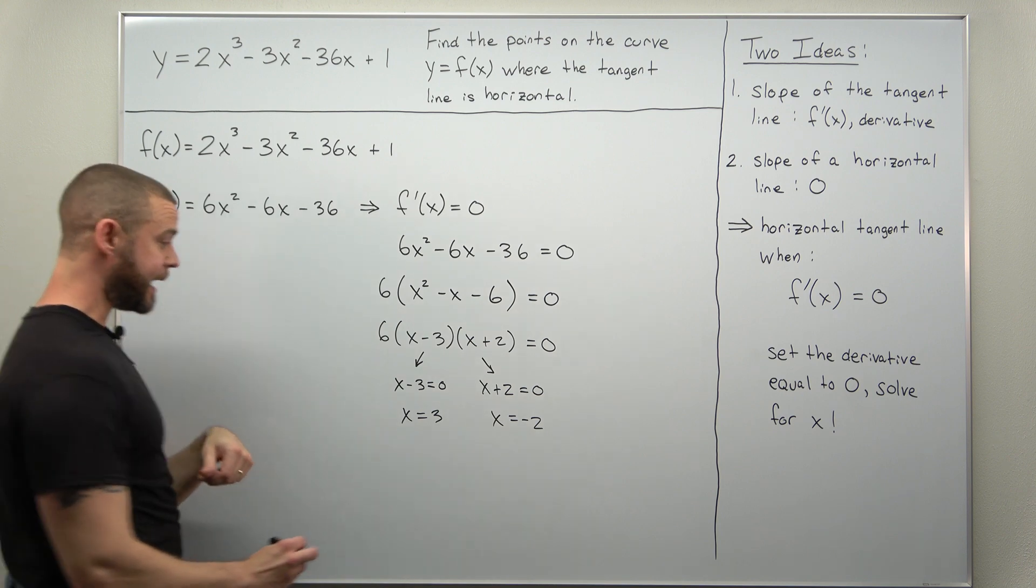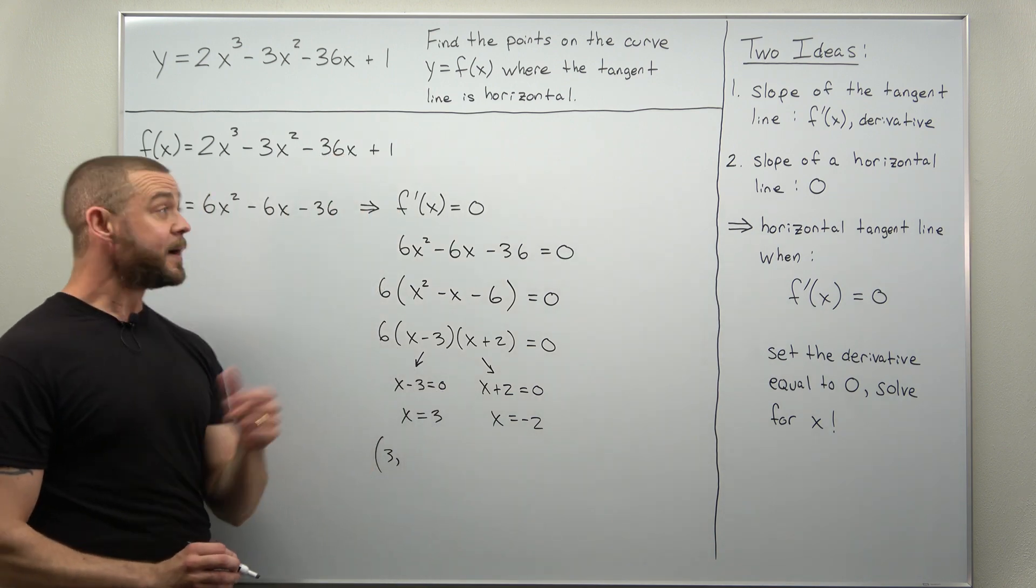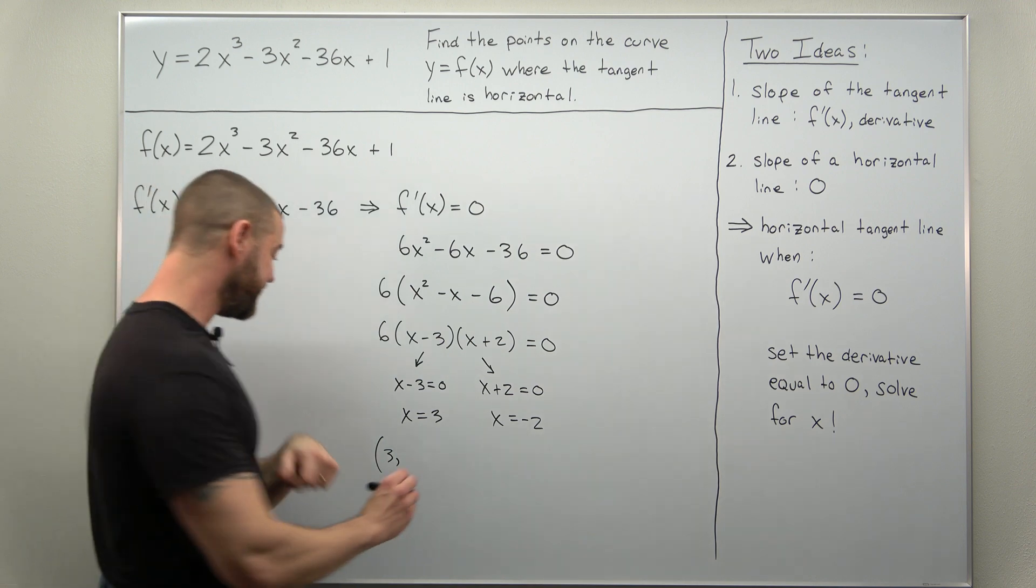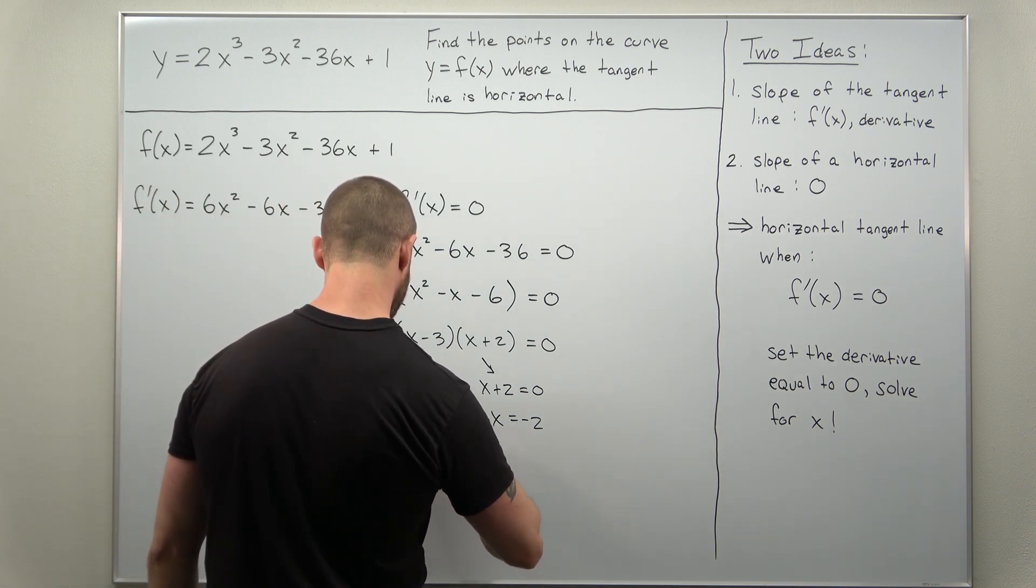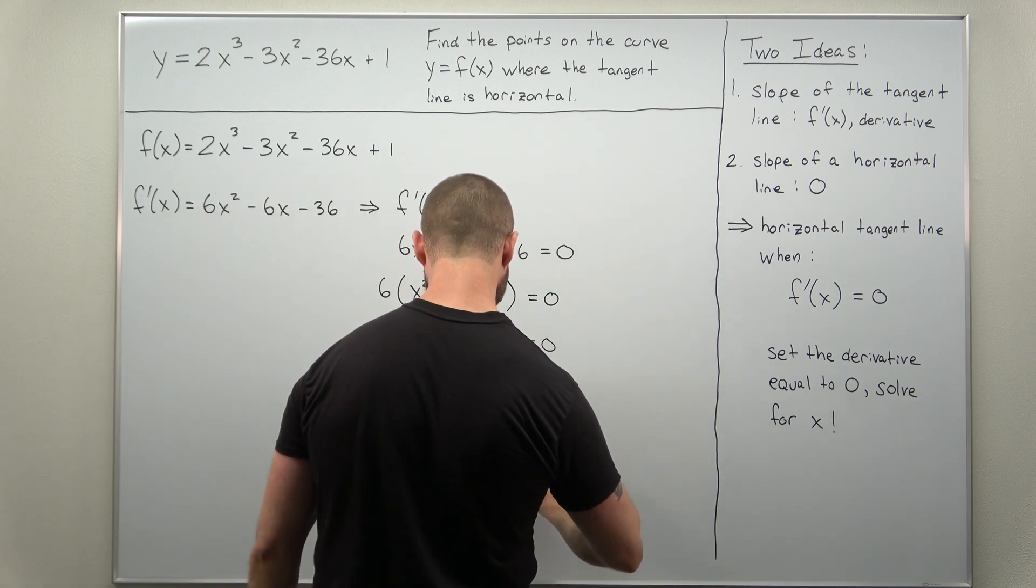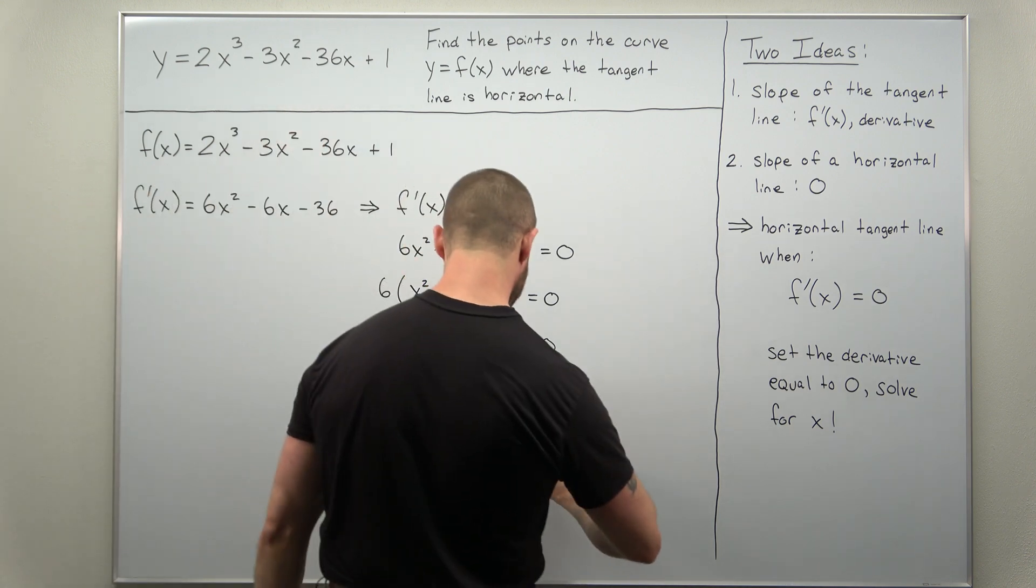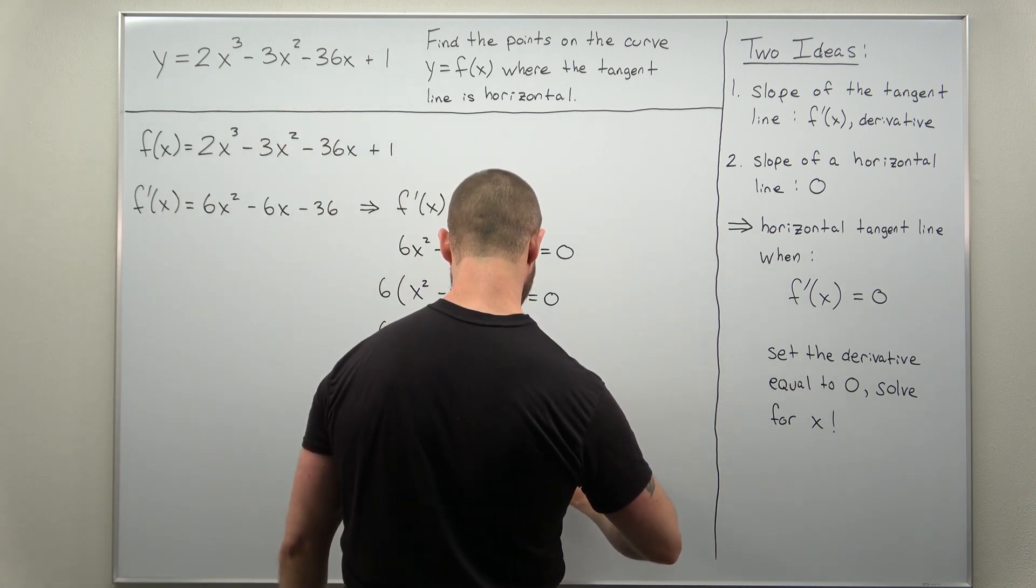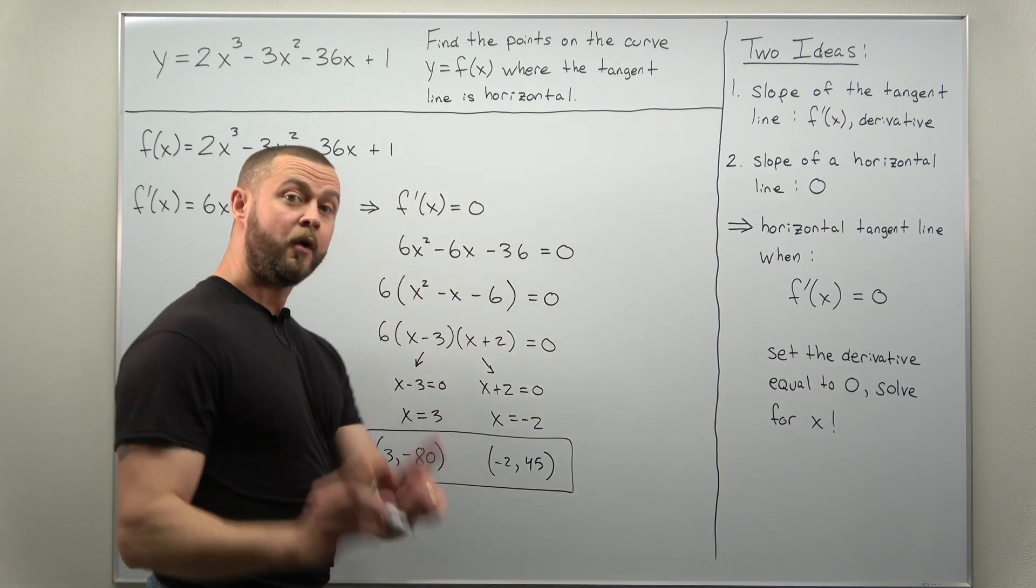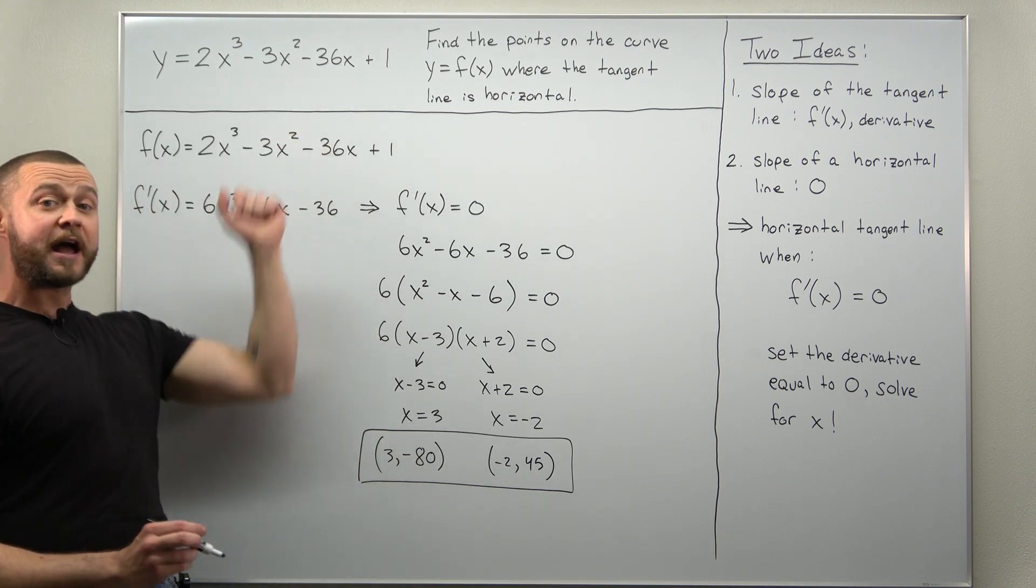All right, if you go ahead and do that, if you plug in three, that's going to come out when you plug that into your function here. Plug in x is three, you're going to get negative 80. And when you plug in negative two for x, again, plugging that into your function, that'll come out to 45.